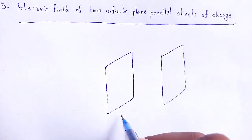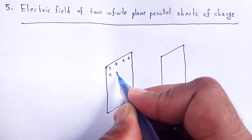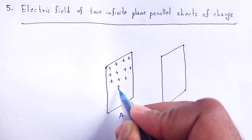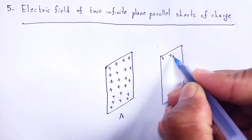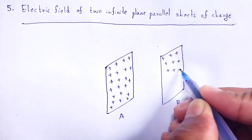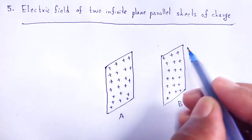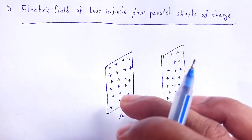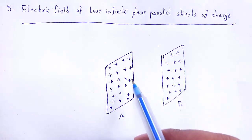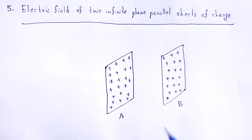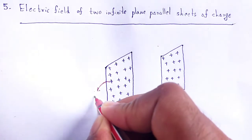One sheet is named A and another one is B. The charges are distributed on these non-conducting infinite sheets of charge. Let the surface charge density of plane sheet A be sigma A.